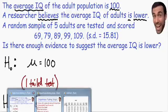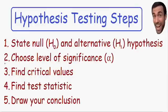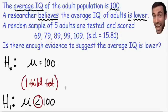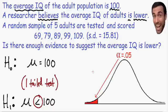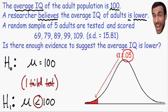Step number two says to choose the level of significance, which is written with the Greek letter alpha. This is just the area in the tail. We need to choose our level of significance. Let me draw a picture of the normal curve to show you what this looks like. The level of significance is just the area in the tails, and I chose a level of significance of 0.05 because this is the most common value used. This problem didn't give us a level of significance, so I just chose 0.05.